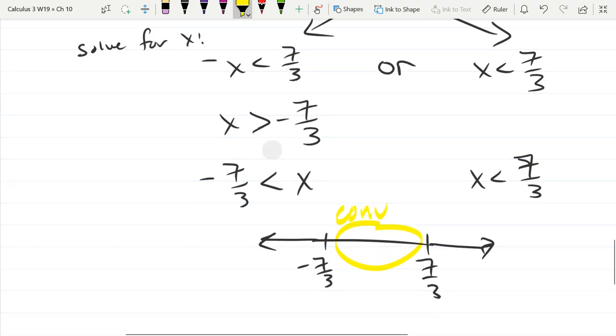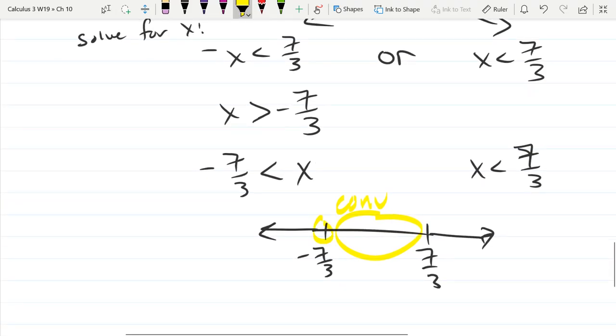And what we have to do next is test, is it going to converge at the end points? So we're going to test the end points next. And unfortunately, we won't be able to use a ratio test when we test the end points here. We'll probably be doing limit comparison and alternating series, depending on what side we're looking at.